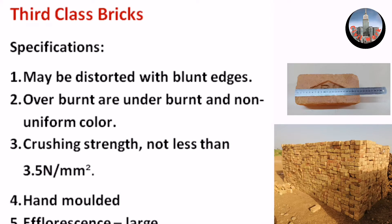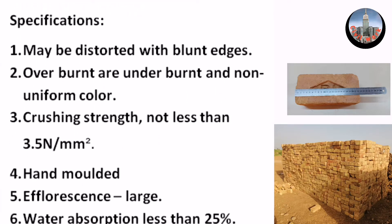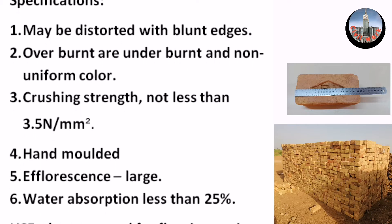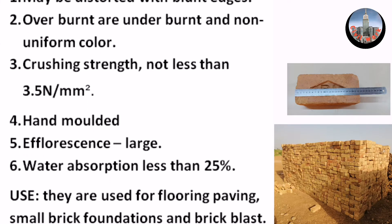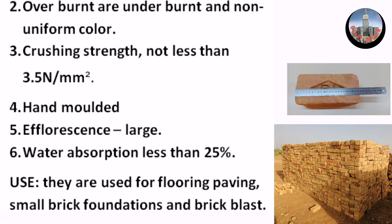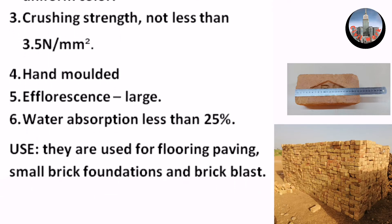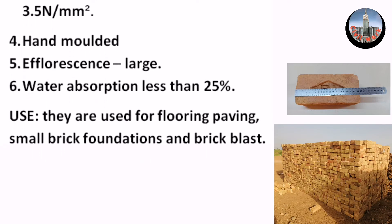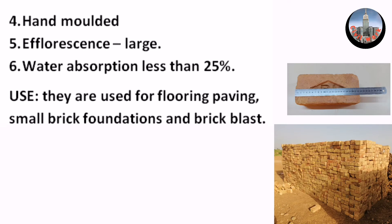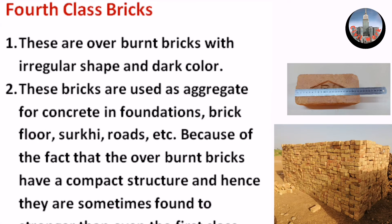Third Class Bricks Specifications: May be distorted with blunt edges. Overburnt or underburnt and non-uniform color. Crushing strength not less than 3.5 N/m². Hand molded. Efflorescence large. Water absorption less than 25%. Use: They are used for flooring, paving, small brick foundations and brick ballast.